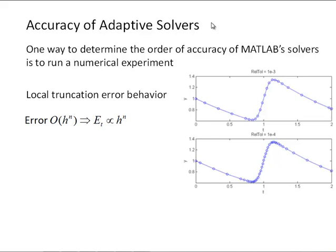The last thing I want to talk about is the accuracy of the adaptive solvers, or as we've talked a lot before, the behavior of the truncation error, ET. One way to determine the order of accuracy of MATLAB solvers is to run a numerical experiment. So recall, we usually think of the local truncation error behavior as being some solvers being some order, h to the n, where n is the order of a solver. So what we're saying is the truncation error is proportional to h to the n. So another way to think about that is we're saying ET is equal to some constant, some unknown constant, times h to the n.